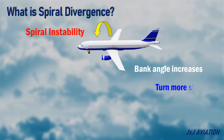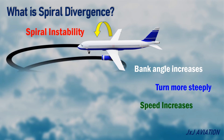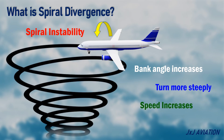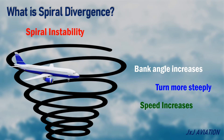The aircraft's speed will increase, the roll becomes steeper, and the turn becomes tighter. This situation can become worse, and the aircraft may enter a steep spiral dive.